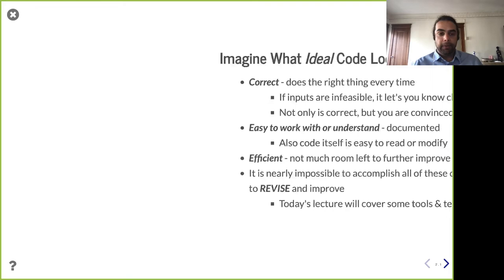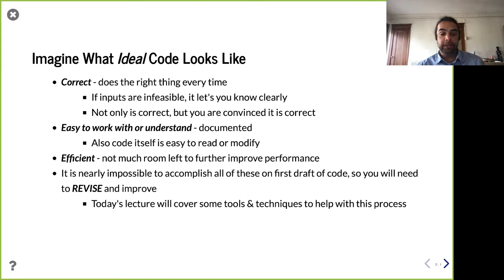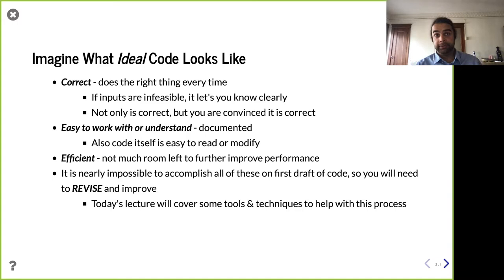It's good to start off thinking about what ideal code would look like. First off, it needs to be correct — it needs to do the right thing, not just some of the time, but every time. It's okay to have constraints; let your users know if inputs are infeasible with an error message. It's one thing to have code that's correct, and another to be convinced it's correct or to convince someone else.